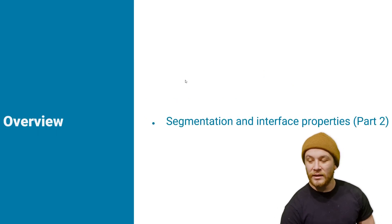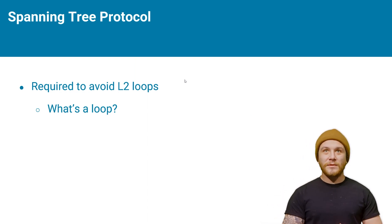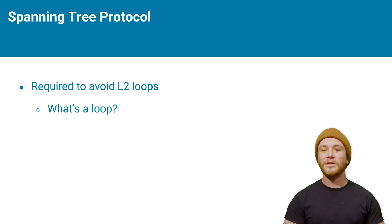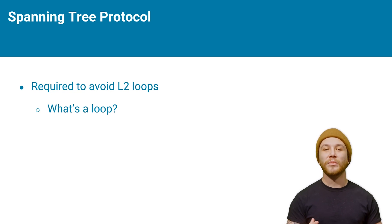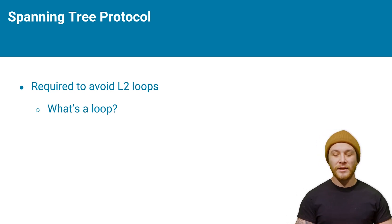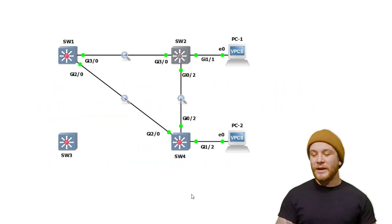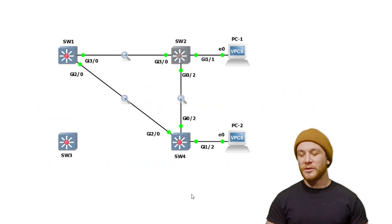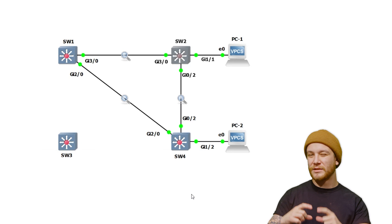So what is spanning tree? To understand spanning tree, we basically have to understand what it's trying to prevent. When somebody talks about a spanning tree loop, they're talking about a layer two loop. I can draw it out here — what we've got is a loop topology where every switch is connected to each other with a port. In itself it's a loop; if you draw it, it looks like a circle.